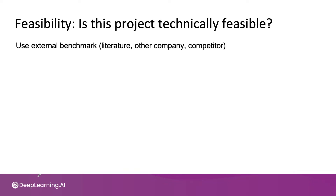One way to get a quick sense of feasibility is to use an external benchmark, such as the research literature or other forms of publications, or if a different company or even a competitor has managed to build a certain type of online search system, recommendation system, or inventory management system before. If there's some external benchmark, that might help give you a sense that this project may be technically feasible. Either to complement or in the absence of this type of external benchmark, here are some other ways to assess feasibility.